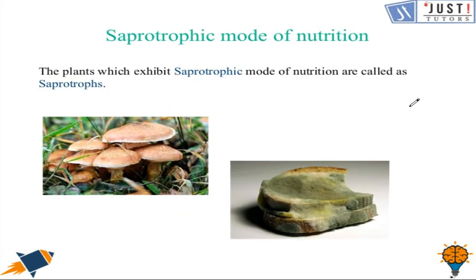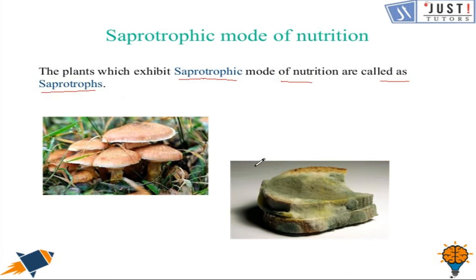Saprophytic mode of nutrition: some plants like fungi take their nutrition from dead and decaying organic matter. They release enzymes onto such organic matter, which decomposes it into liquid form, and then they absorb nutrients in liquid form. Plants exhibiting this mode are called saprotrophs. For example, mushrooms and Indian pipe, which are found on dead or rotting material, extend their mycelium and secrete enzymes to digest decaying matter.